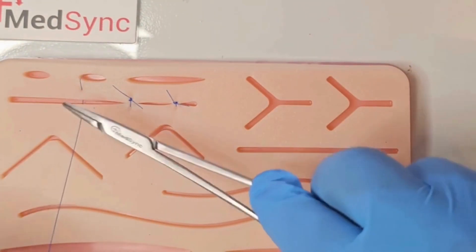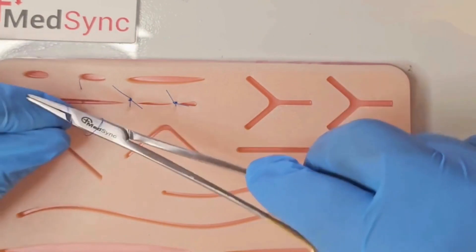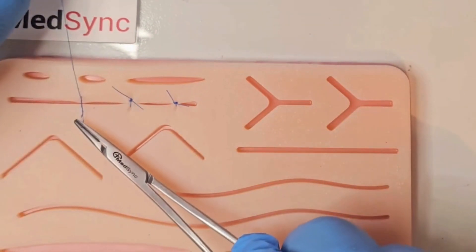You perform two revolutions around the needle holder. This is a surgeon's knot. Pull the suture through.